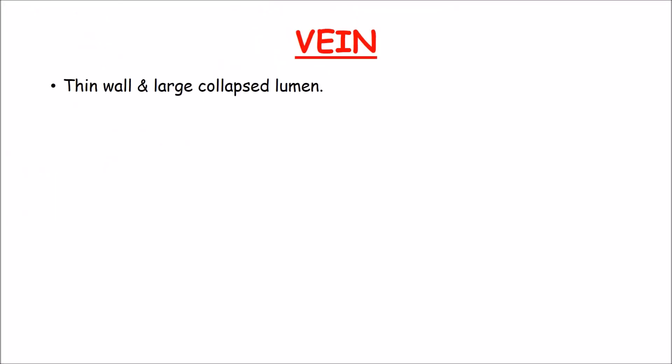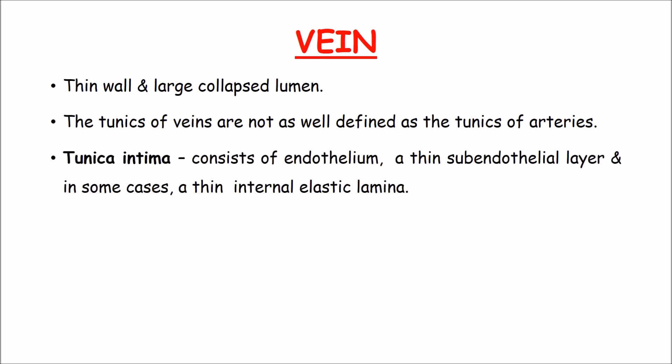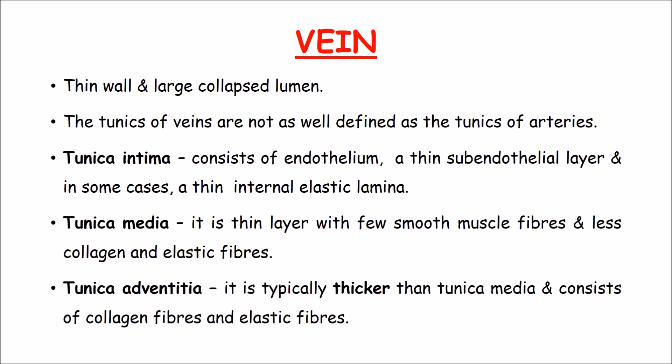The vein is thin-walled with a large collapsed lumen. The tunics of veins are not as well defined as those of arteries. The tunica intima consists of endothelium, a subendothelial layer, and in some cases a thin internal elastic lamina. The tunica media is a thin layer with few smooth muscle fibres and less collagen and elastic fibres. The tunica adventitia is typically thicker than the tunica media and consists of collagen and elastic fibres.